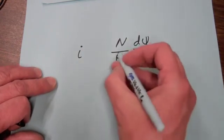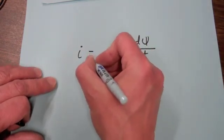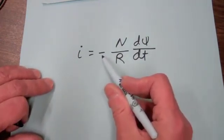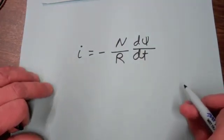Now this equation is usually written as i equals minus N over R dΦ/dt. We will talk about the significance of this minus sign in a future video on Lenz's Law.